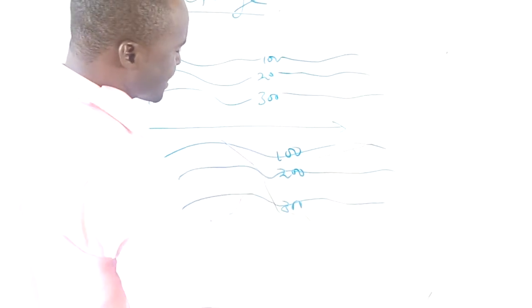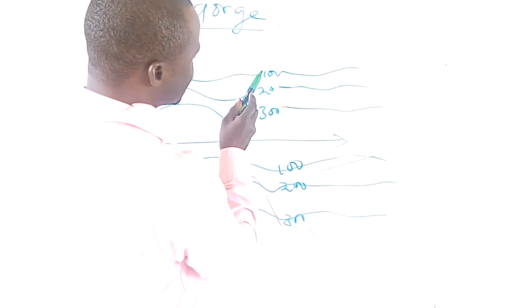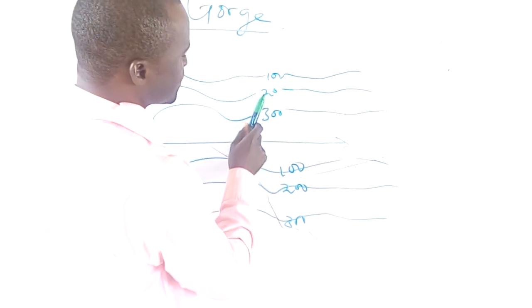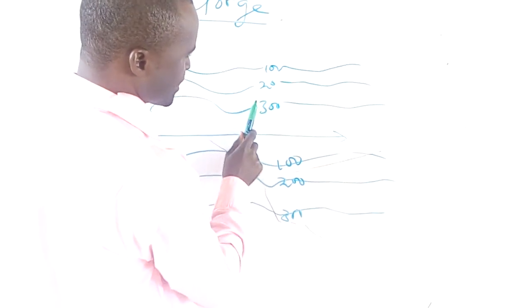Remember in our previous classes, we said if this is 100 and this is 200, the contouring number between this one is what? 100. You can still remember very well.